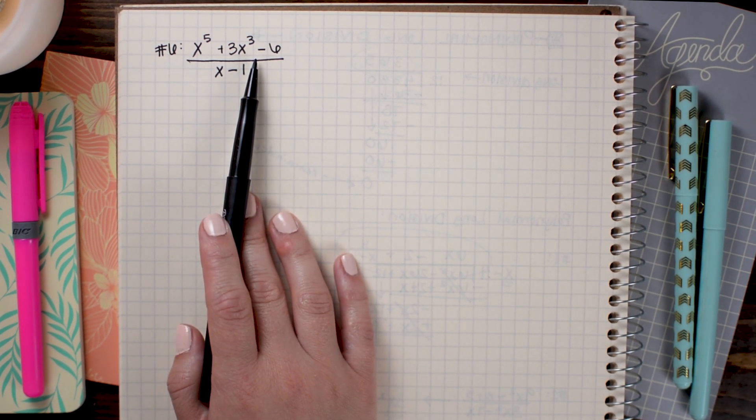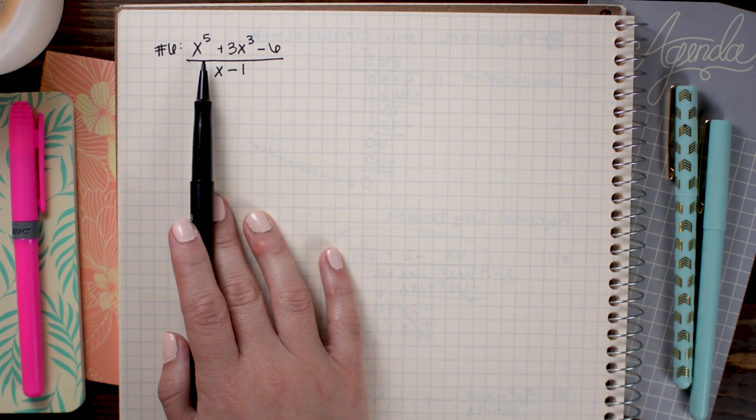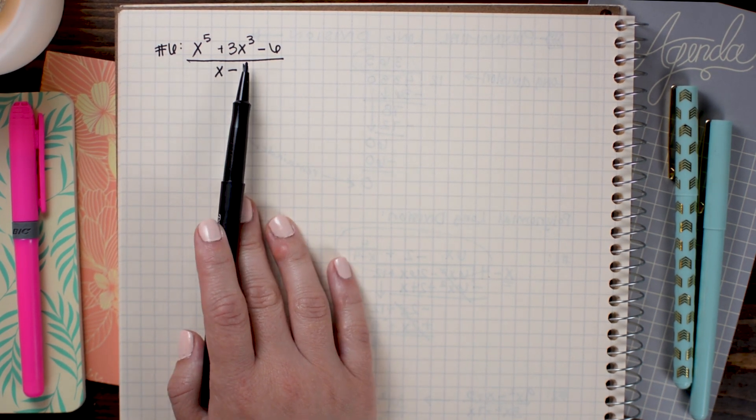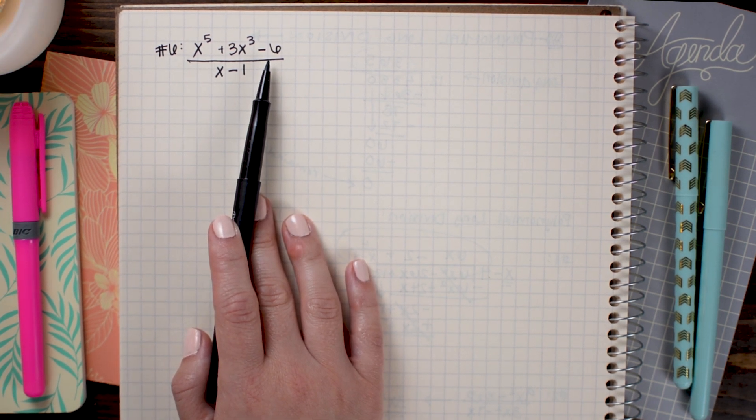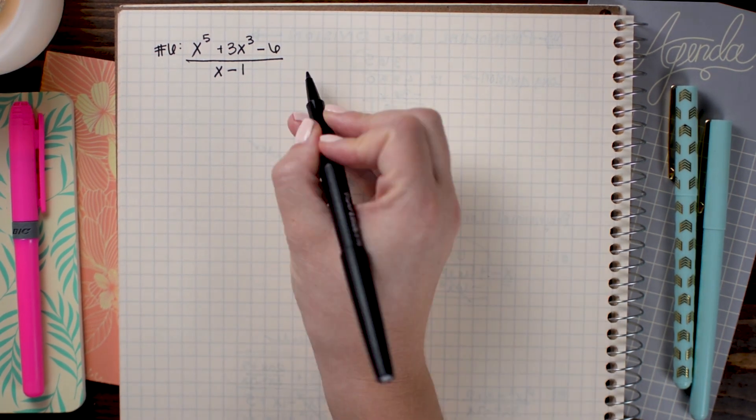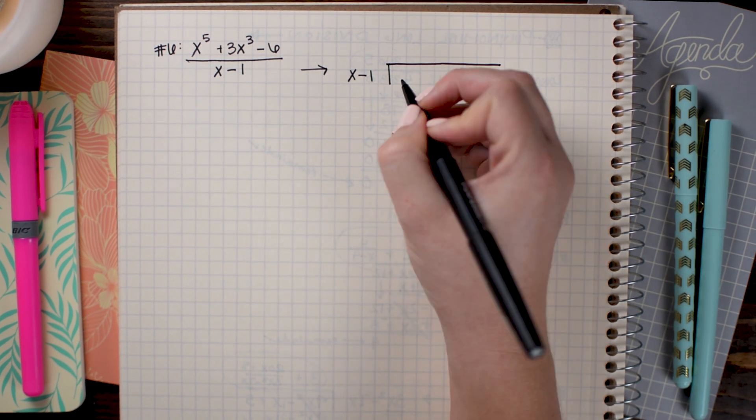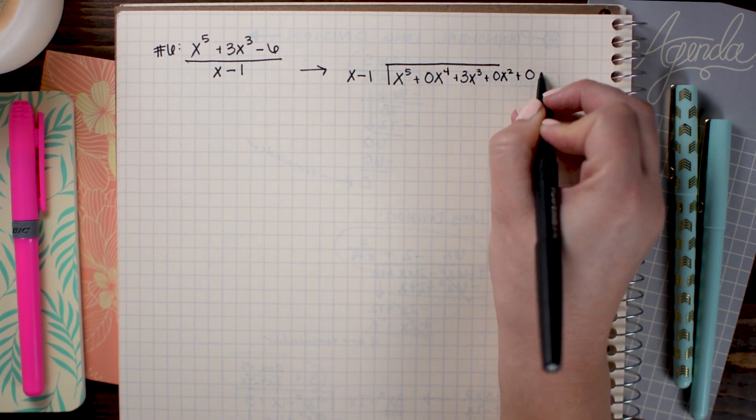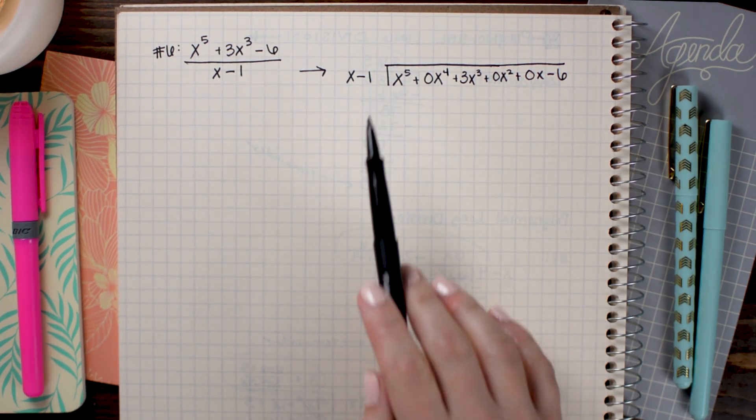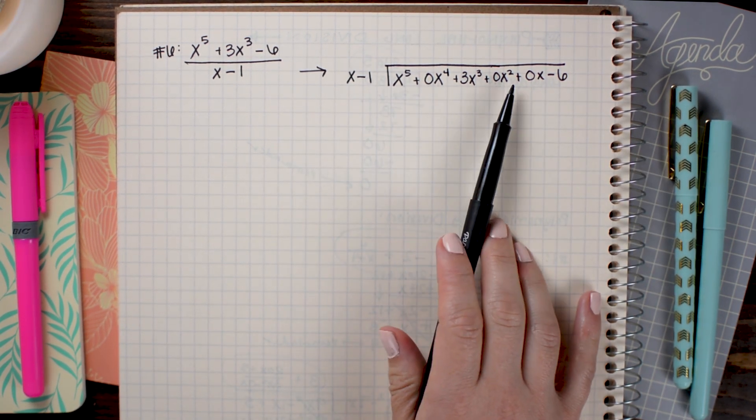Now for polynomial long division to work, you must have all of those terms written down even if they aren't here. So what we do when they're not here is we write in a 0x⁴ term and a 0x² term and a 0x term. That doesn't change our equation, but it accounts for all of those scenarios. So when I set up this problem, I'm going to be careful to include those extra terms.